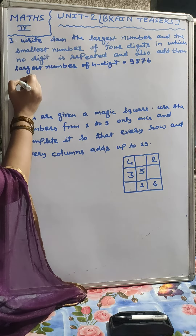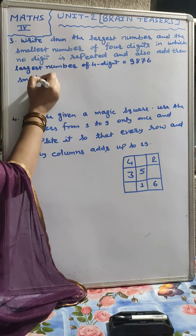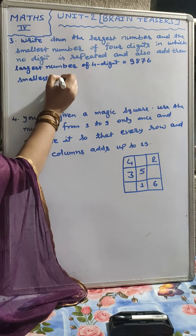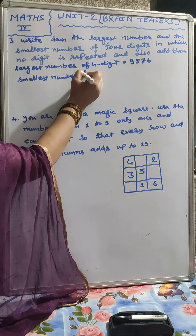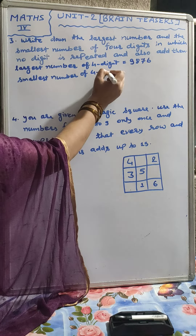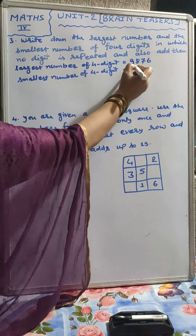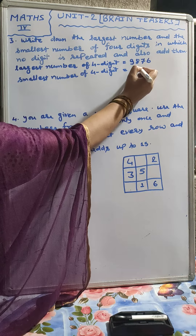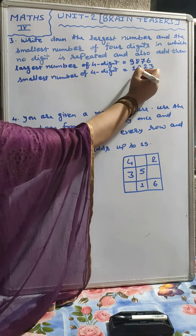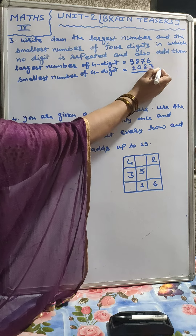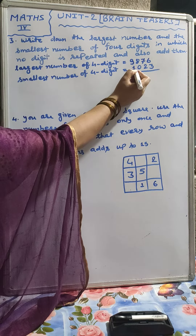Next we will write the smallest number of 4 digits. We write 1, then 0, 2, 3. That is 1023 — the smallest 4-digit number in which there is no repetition of any digit.